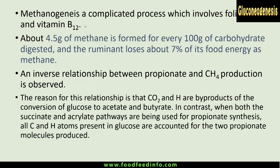The synthesis of methane — methanogenesis — is a complicated process involving cobalamin and vitamin B12. Every 100 grams of carbohydrate digested in the rumen results in the production of 4.5 grams of methane gas. Ruminant animals lose about 7% of their food energy as methane. Since carbon dioxide and methane contribute nothing to body nutrition, they must be belched out from the rumen, meaning gas production is an energy-losing process.